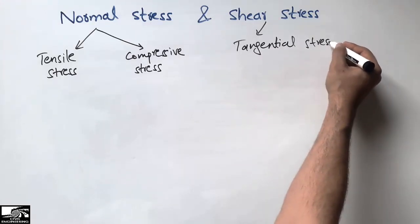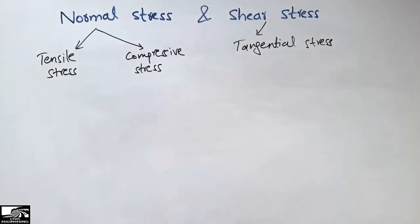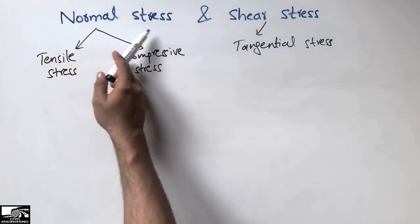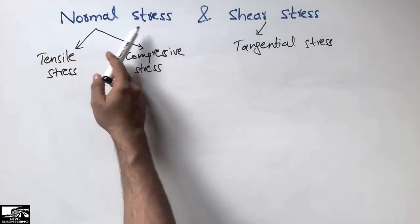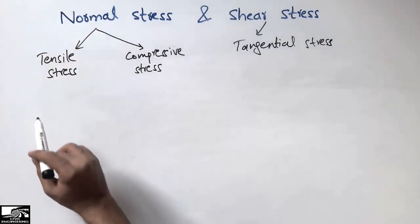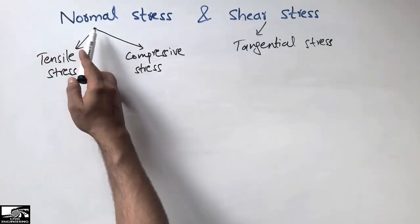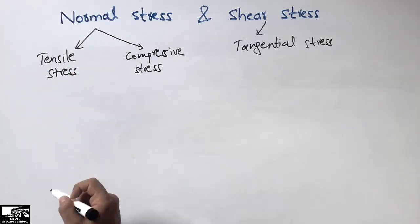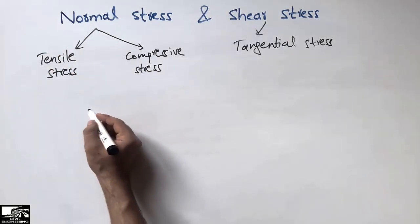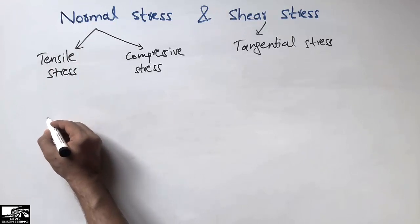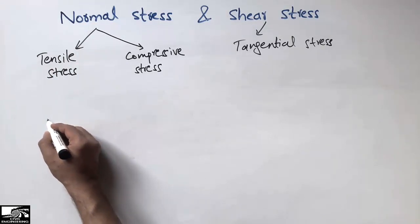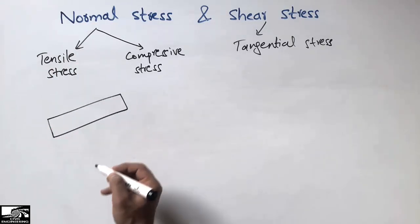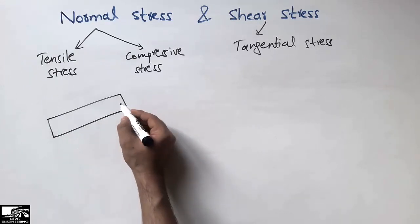Normal stress can be defined from its name — it is the type of stress which is normal to the surface area. For example, if I consider any member, let's say an aluminum member or a wood member...